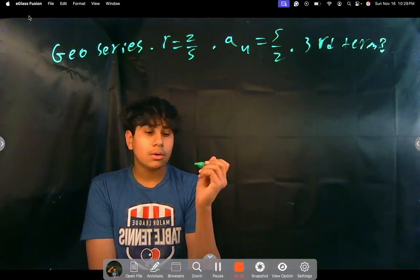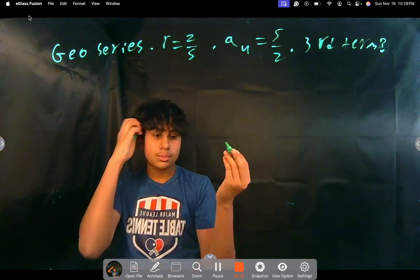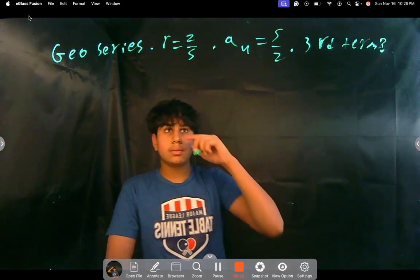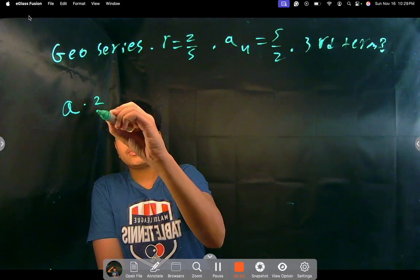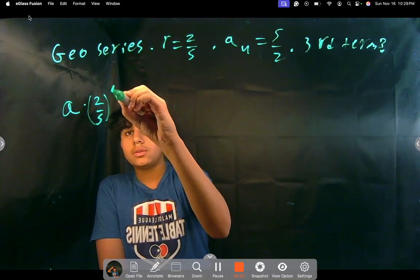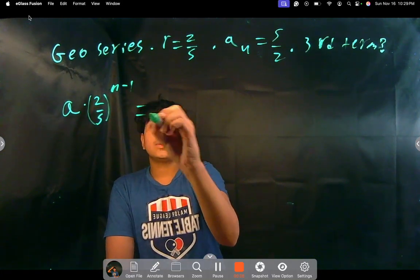So first we can write out our rule for every geometric series. The basic rule, a times r to the n minus 1. So a, which we don't know, times r, which is 2 over 5, to the power of n minus 1 is equal to something.